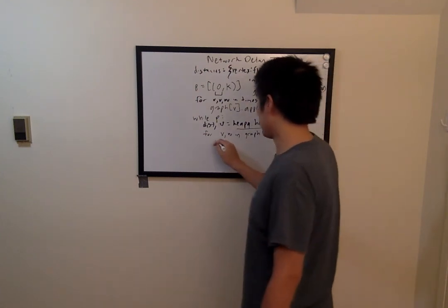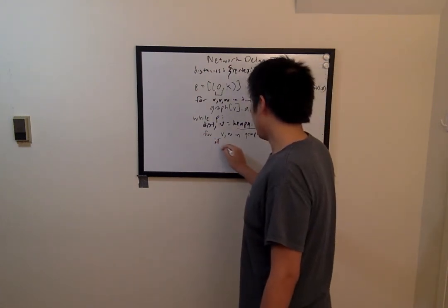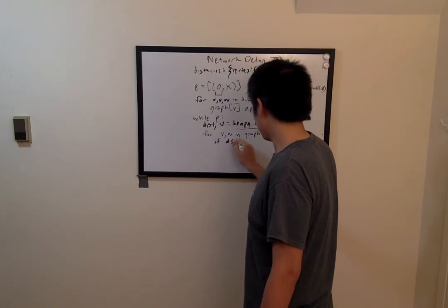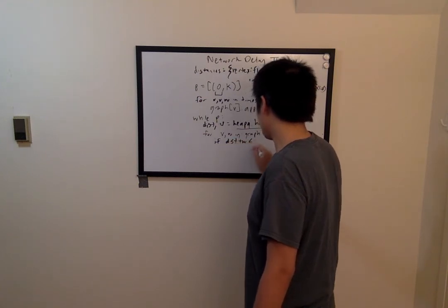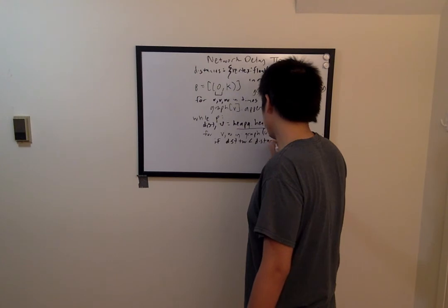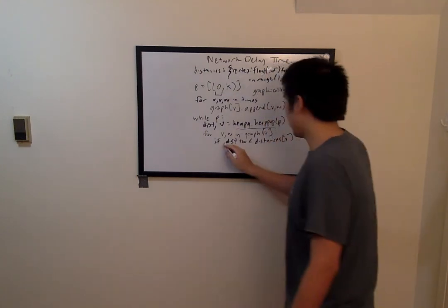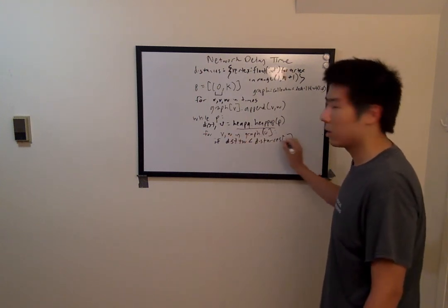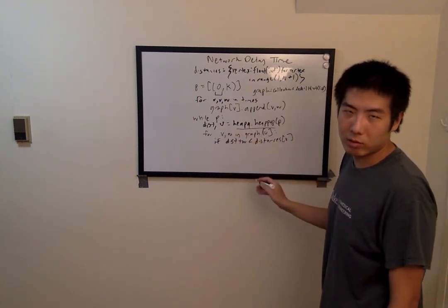We want to ask the question, if distance plus w is less than distances of v, in other words, if we found a shorter path from the current vertex to the destination vertex than the distance that's currently reported at the destination vertex.